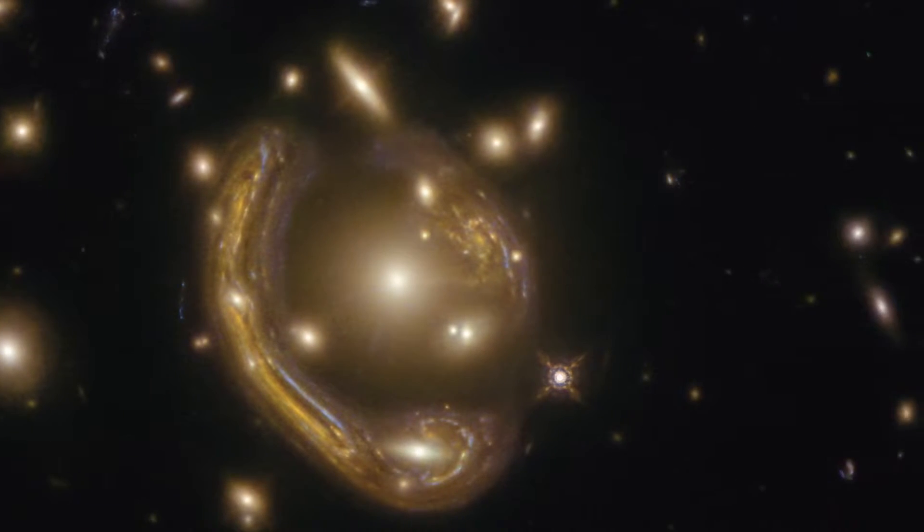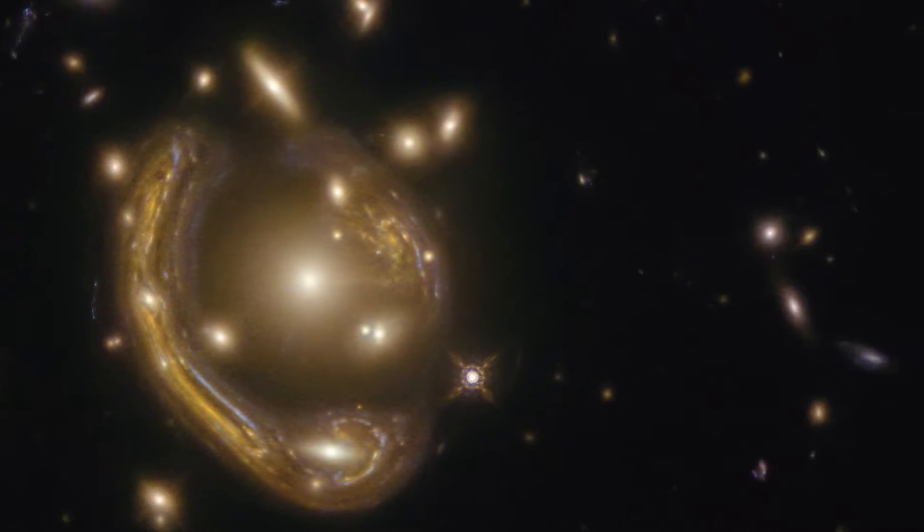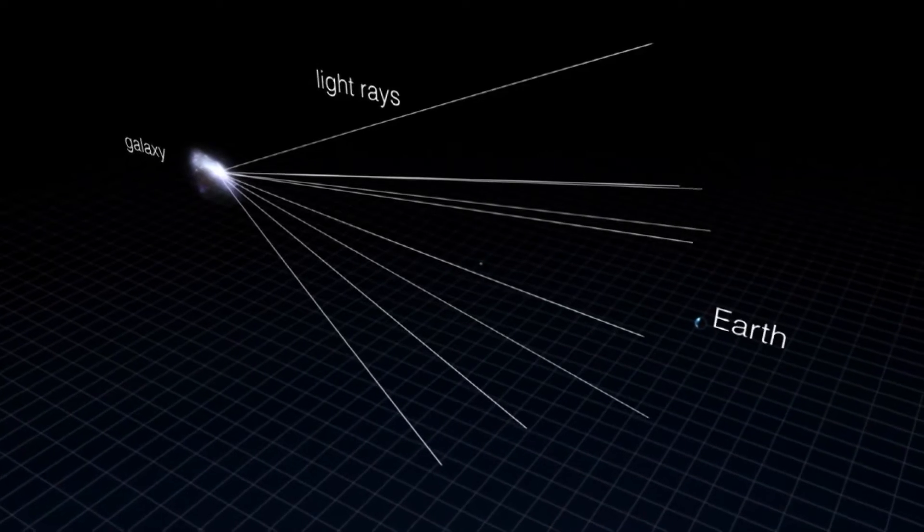This object's unusual shape is the result of gravitational lensing. Albert Einstein, in his general theory of relativity, first theorized that a large gravitational field could act as a lens.